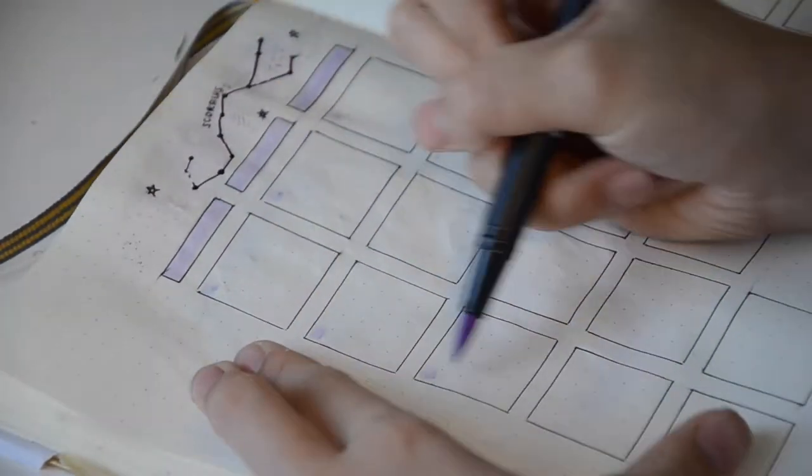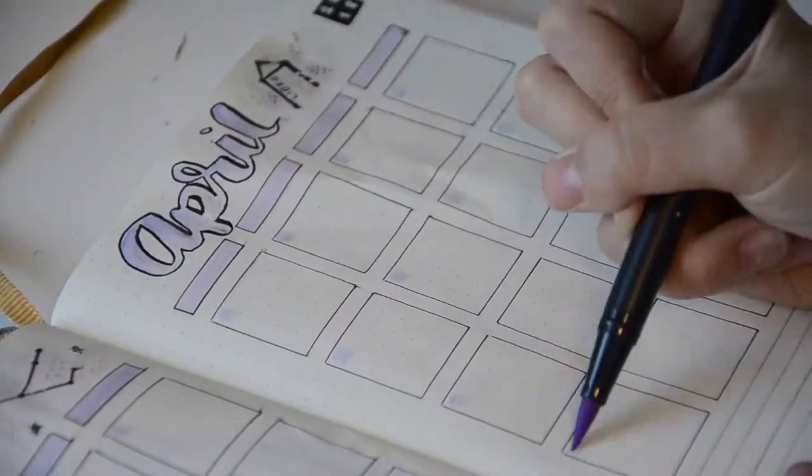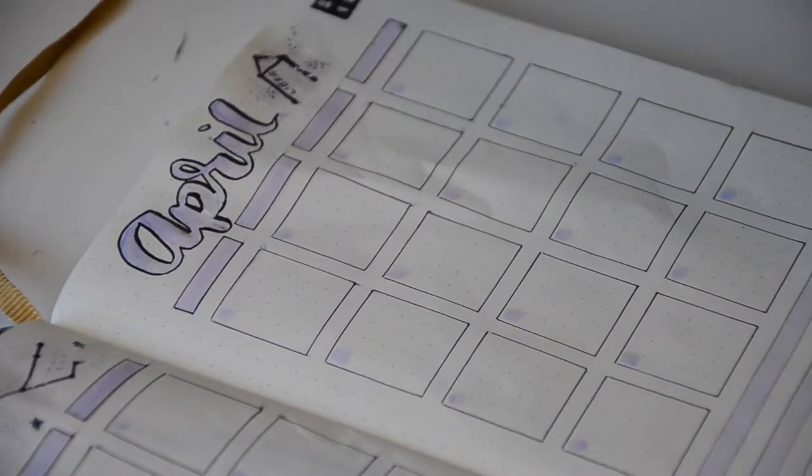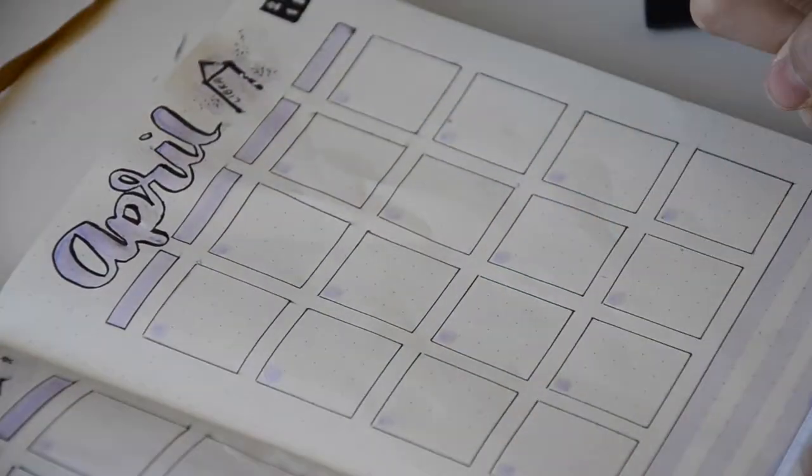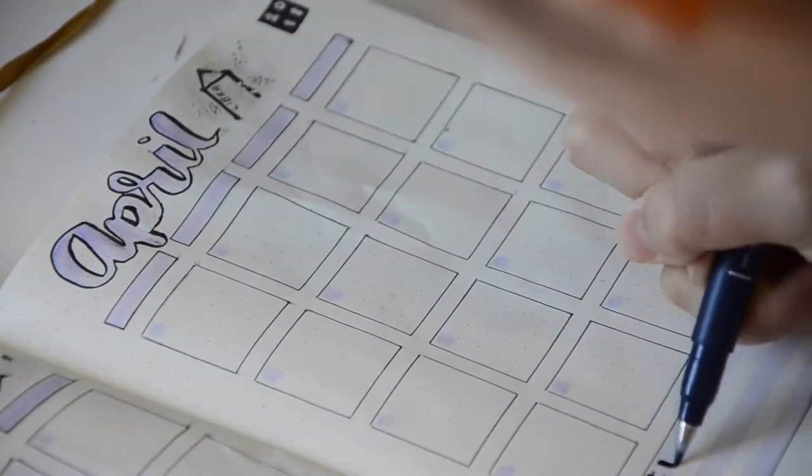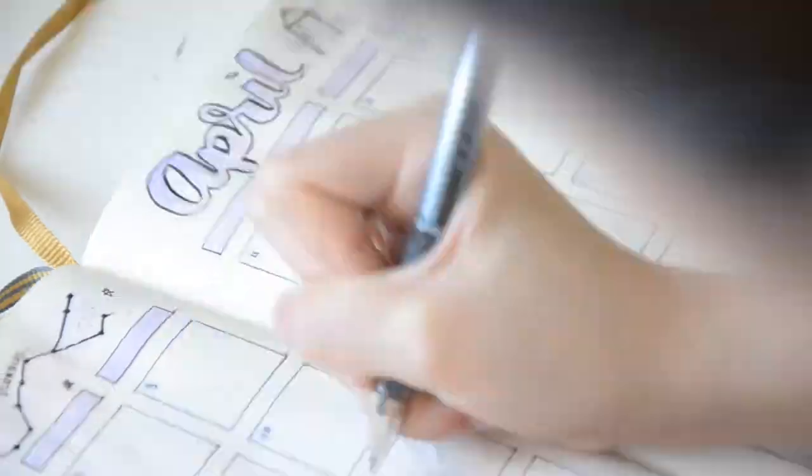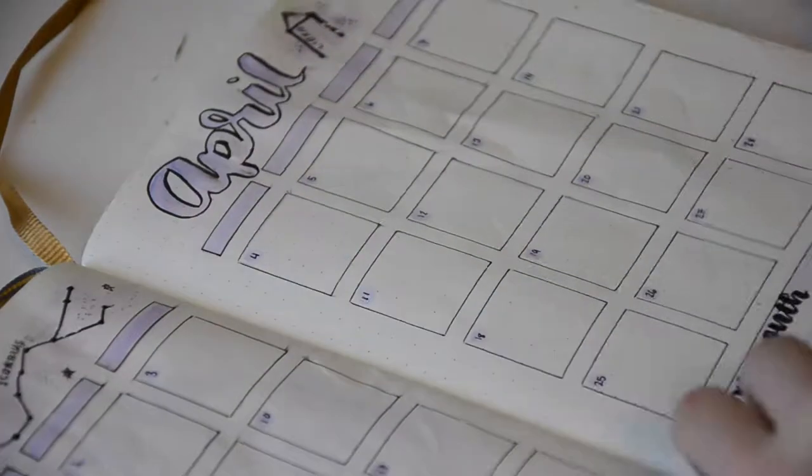Here, I'm just erasing a few things, and using my Tombow dual brush pen to add in tiny dots for where I'm going to be adding in the dates of the month. At the bottom, I just have a section for next month, and I'm just adding in the dates of the month.